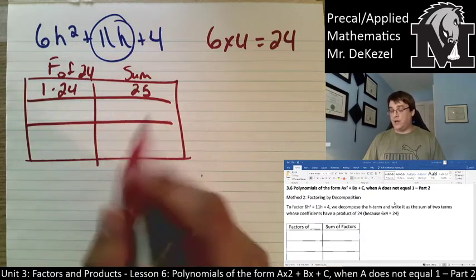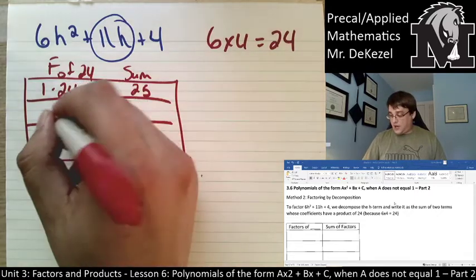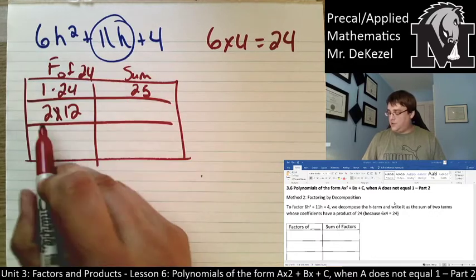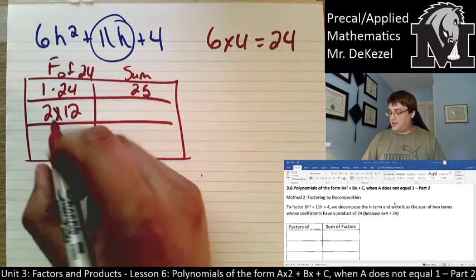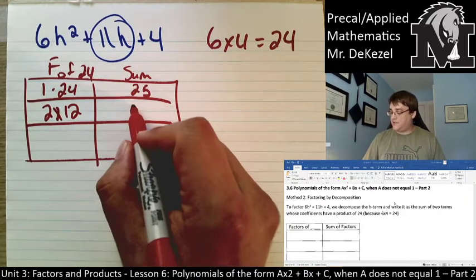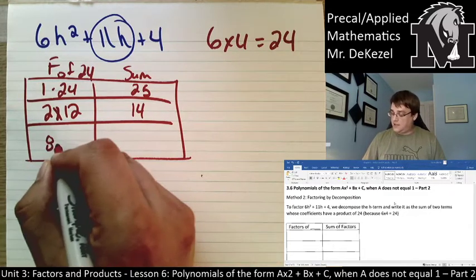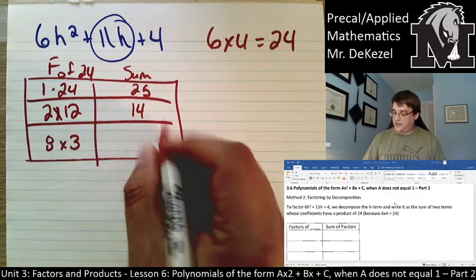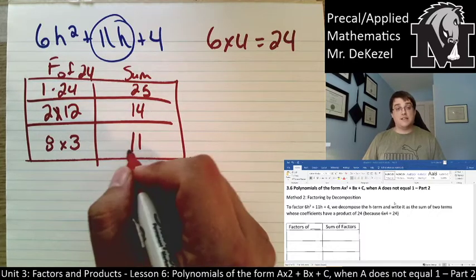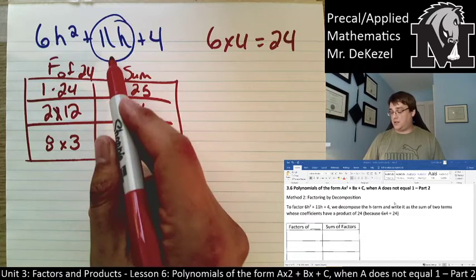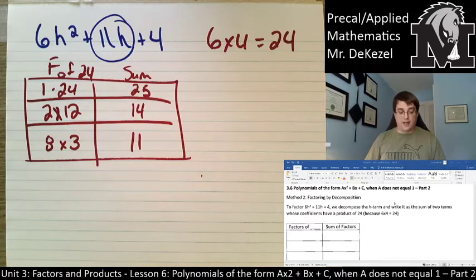Factors of 24 could be 1 and 24. The sum of those is 25. Now, what we're trying to do is find the factors of 24 that add to 11. 1 and 24 doesn't work. Let's try 2 and 12. That is 14, and that is not 11. Let's try 8 times 3. The sum of those is 11. So, that means I'm going to be decomposing this middle term into 8 and 3.